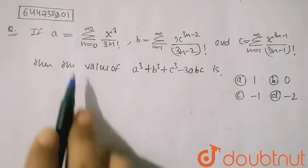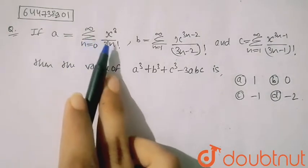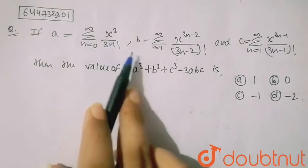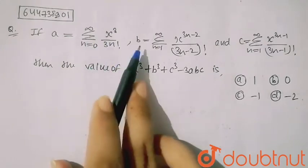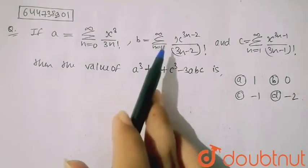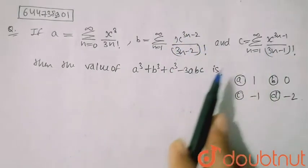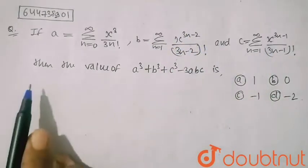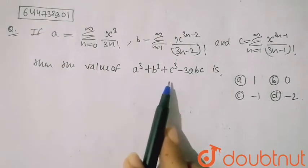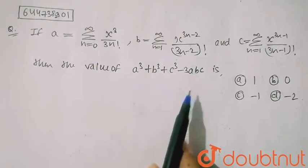Hello friends. In this question, it is given that a equals the summation from n=0 to infinity of x³ upon (3n)!, b equals the summation from n=1 to infinity of the given term, and c is also given. We need to find the value of a³ + b³ + c³ - 3abc.